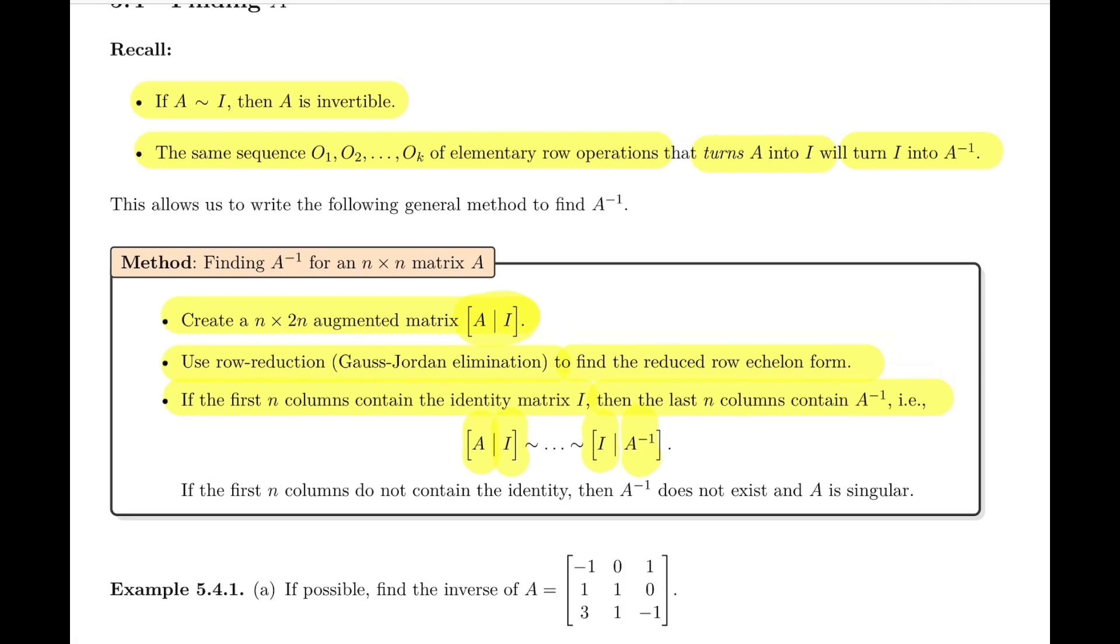The last statement is if that doesn't happen - if the first n columns do not contain I - then we can stop and say that A inverse doesn't exist, or that A is singular, which are equivalent statements. We're going to see in an example how can it occur that A does not turn into I.